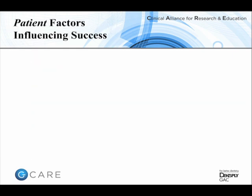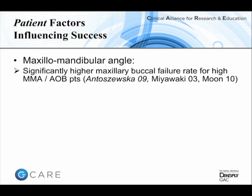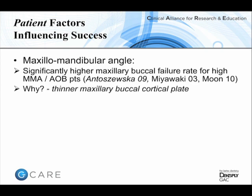Patient-related reasons for failure include facial pattern: several papers have shown that patients with a high maxillomandibular angle or a long face have a higher failure rate for buccal insertion sites. The reason appears to be that these patients anatomically have thinner cortical plate on the buccal side of the maxilla — these are ironically often the patients we wish to insert mini-implants posteriorly to correct an open bite, which is one reason I opt for palatal insertion sites in these cases.